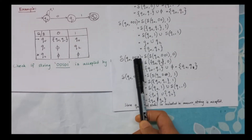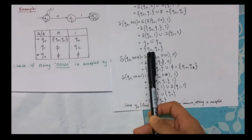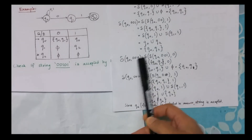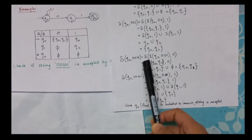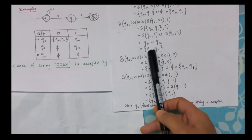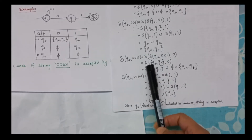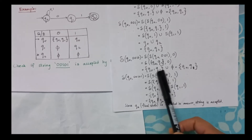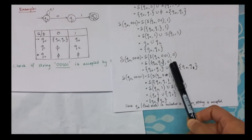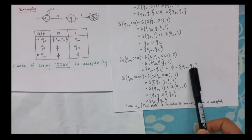Delta of q0, 0010 — the first four symbols of the string — equals delta of delta of q0, 001, comma 0, which gives me delta of q0, q2, comma 0. That is this result comma 0. Equal to delta of q0, 0, which is q0, q1, union delta of q2, 0. q2 with 0 is null. So I got my final answer as q0, q1.